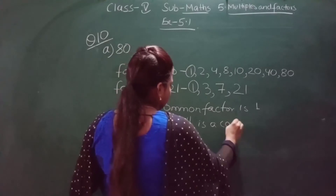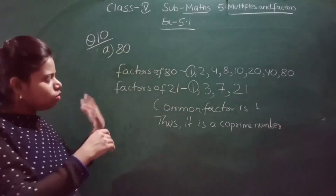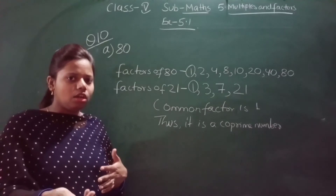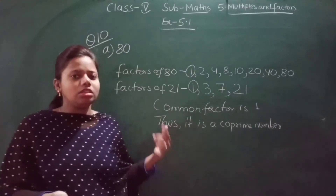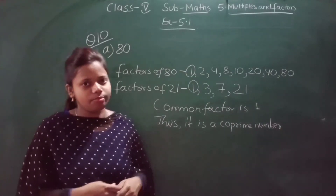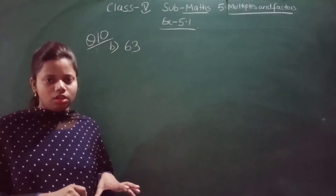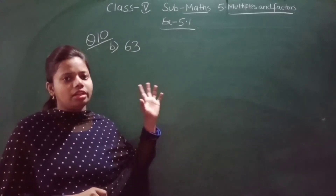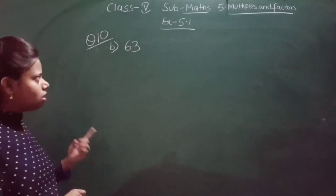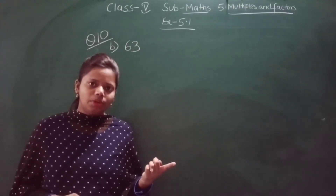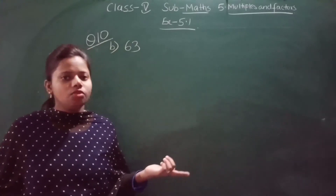So I hope you have understood — you have to choose a number such that when you write the factors, you get 1 as the only common factor. Now let us see one more example. Question number B is 63. We have to choose a composite number that gives only 1 as the common factor. Let us start with 4 — 4 is a composite number, and 63 is an odd number, so 63 and 4 can become a co-prime pair.